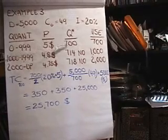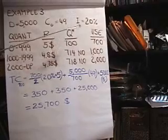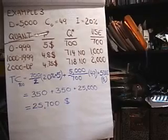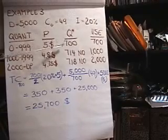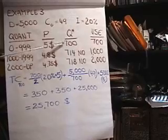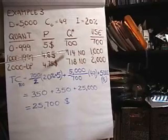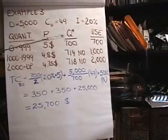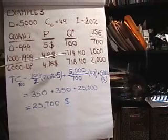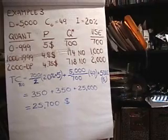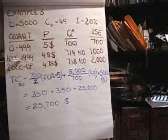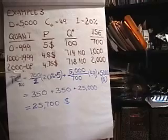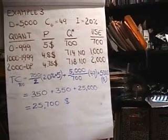So in step one, we calculate the EOQ for each price. In the denominator, it's 20% times the price for the carrying cost. So the EOQ at $5 is 700. The EOQ at $4.80 is 714. The EOQ at $4.75 is 718. On to step two, the 700 is feasible. It's within that range. 714 is not feasible, so we adjust up to 1,000. 718 is not in this range, so we have to adjust that up to 2,000.